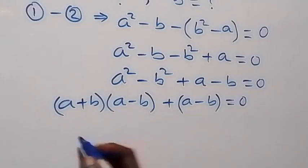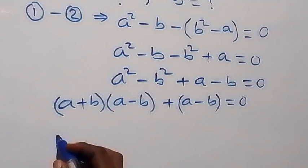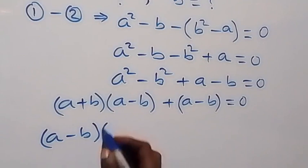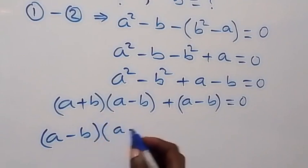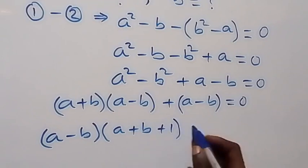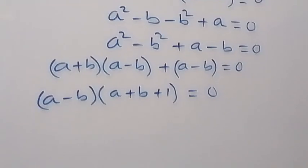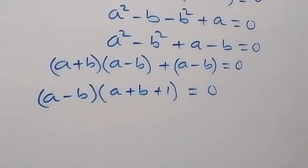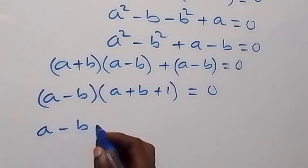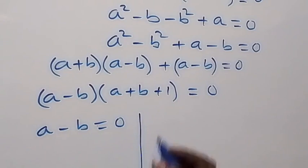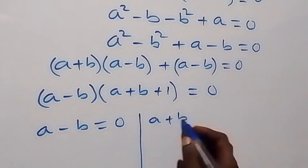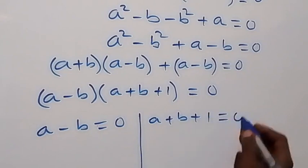We factor out (a minus b) common, which gives us (a minus b) into bracket (a plus b plus 1), equals zero. From here we have two possible cases: either a minus b equals zero, or a plus b plus 1 equals zero.